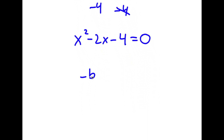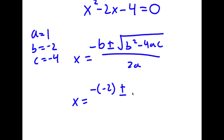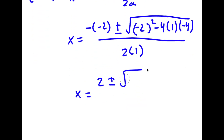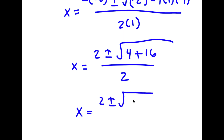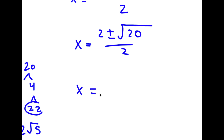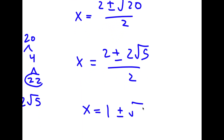To solve this, I'm going to use the quadratic formula: negative b plus or minus the square root of b squared minus 4ac, all over 2a. Here a is 1, b is negative 2, and c is negative 4. So x equals negative of negative 2 plus or minus the square root of negative 2 squared minus 4 times 1 times negative 4, all over 2, which gives 2 plus or minus the square root of 20 over 2. The square root of 20 equals 2 root 5, so x equals 2 plus or minus 2 root 5 over 2, which simplifies to x equals 1 plus or minus the square root of 5.